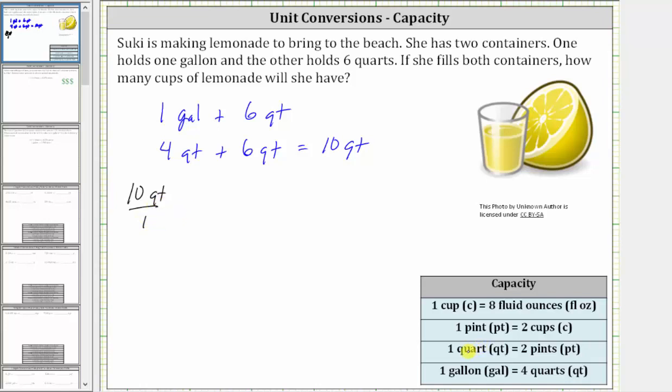Looking at the conversions below, since one quart is equal to two pints, we can use this conversion to convert quarts to pints. And then since one pint is equal to two cups, we can use this conversion to convert the pints to cups. So because we're using two conversions, we will multiply by two unit fractions.